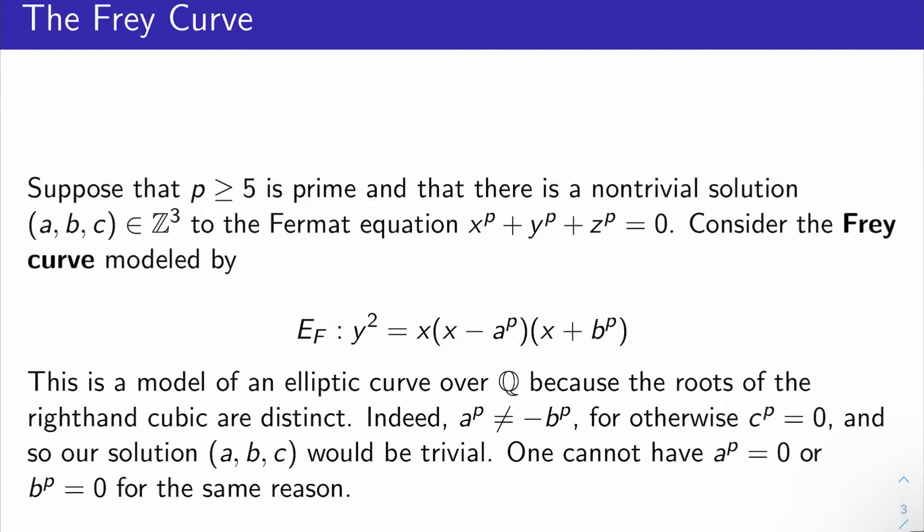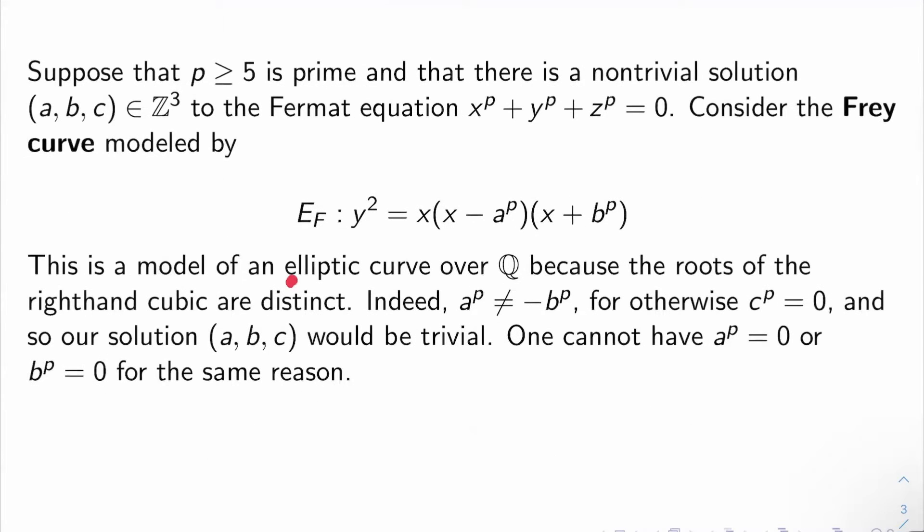What you do is you build what's called the Frey curve associated to this solution. We'll call this curve E_F, or rather we'll call its model E_F, and it's given by y^2 = x(x - a^p)(x + b^p). Now this is a Weierstrass model of an elliptic curve over the rationals,